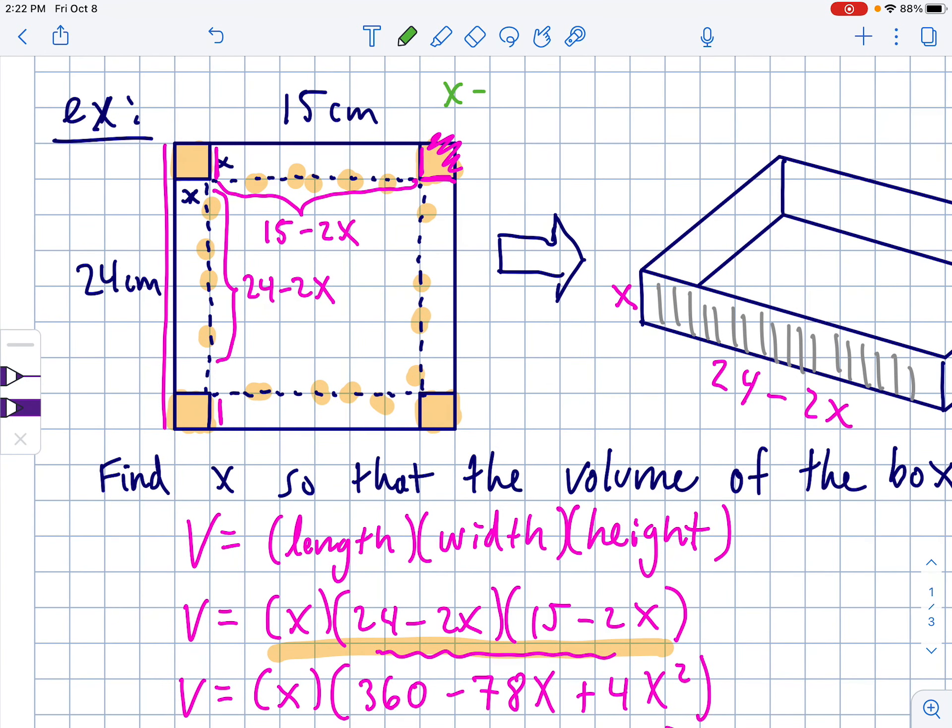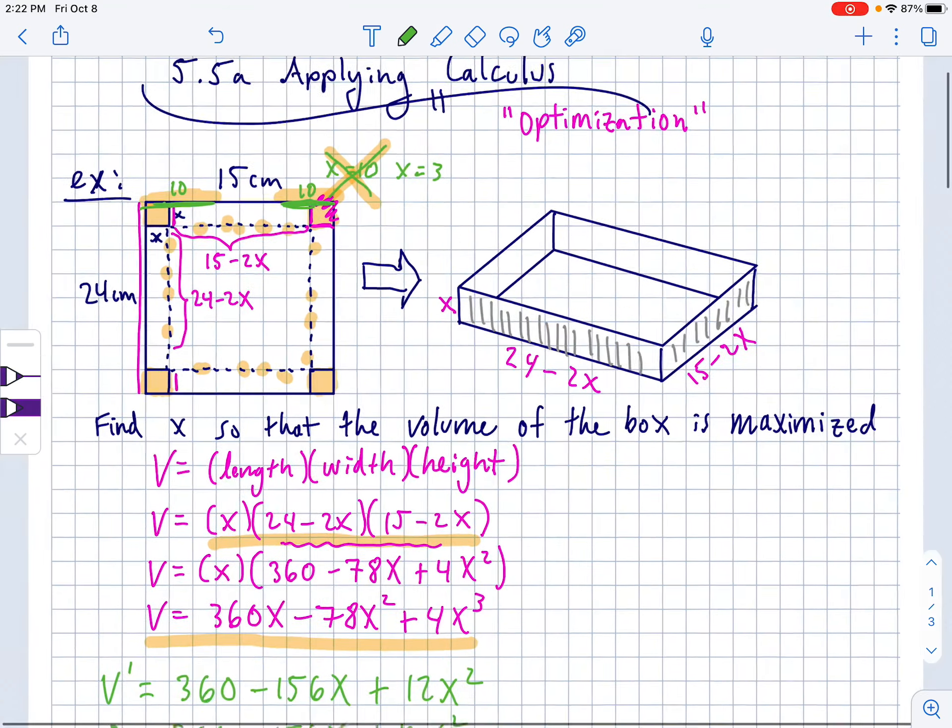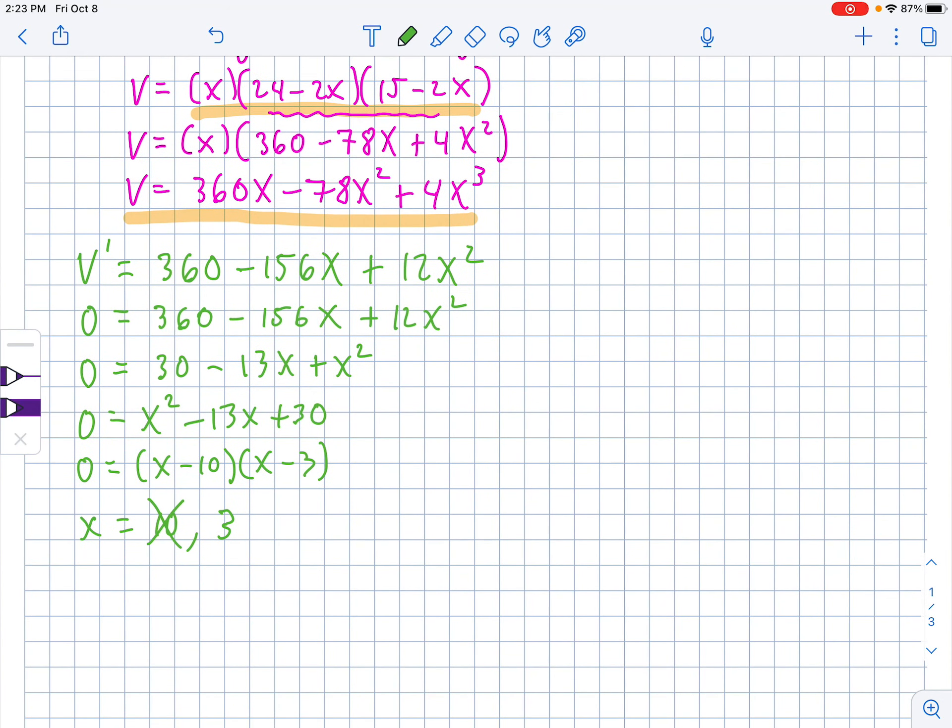Now, when we think about the original problem, if we just got x is equal to 10 and x is equal to 3 from both of those, picture like this x right here being 10 and this x being 10. So if I put 10 on this side and 10 on this side, do you see how those two things add up to more than 15? That means in context of the problem, my x values have to be 15 halves or under, 7.5 or under. So this x value of 10 doesn't make sense in the context of the problem. So we can cross that out and just say it's only x equals 3 because 10 is unrealistic because it's outside the domain of the problem.